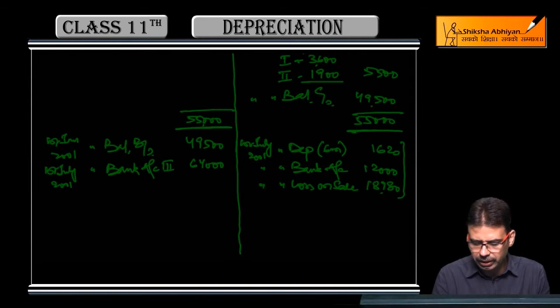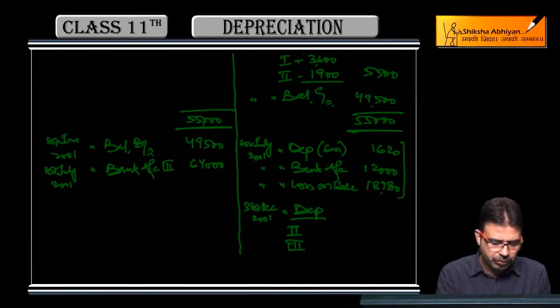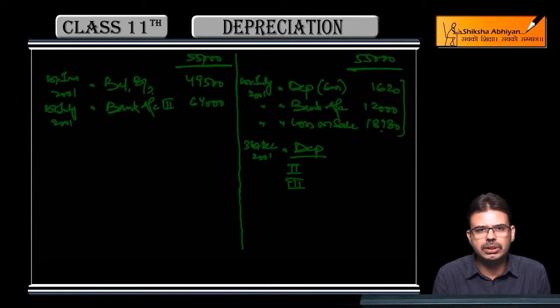Let's make a working note for this. On 31st December 2001, we also apply depreciation on the remaining machinery. First machinery was 40,000, second was 20,000. On 20,000 first year depreciation 1,000, balance 19,000. Next year on 19,000 depreciation 1,900, balance 17,100.